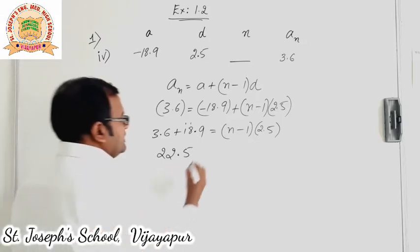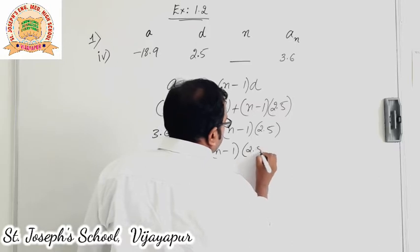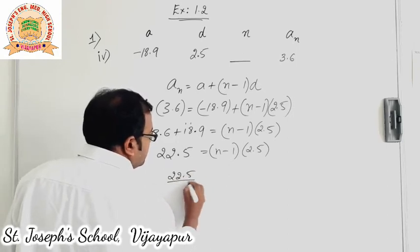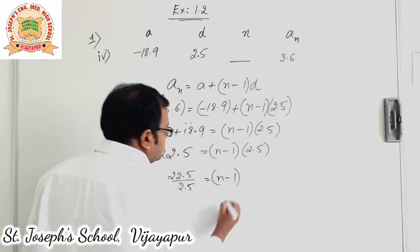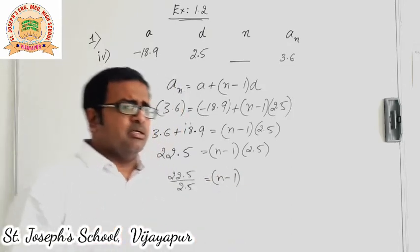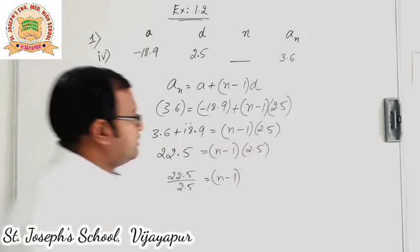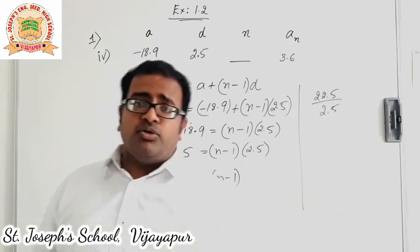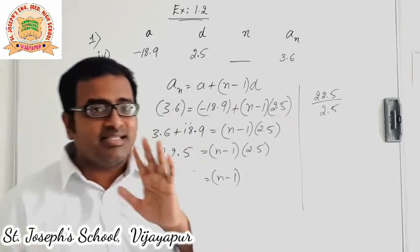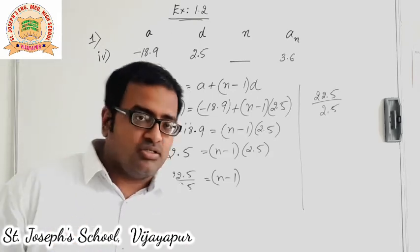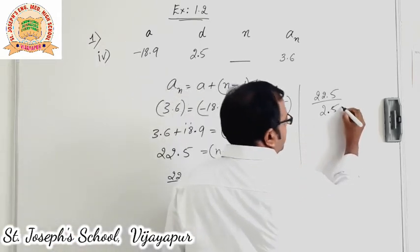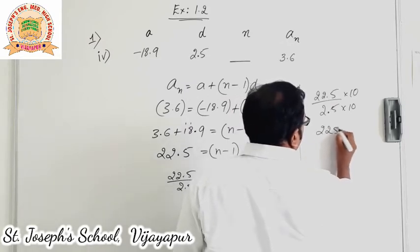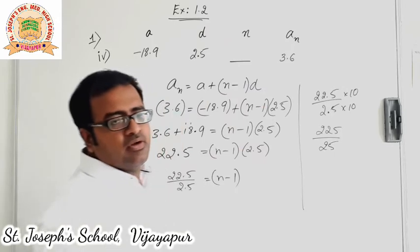22.5 is equal to n minus 1 into 2.5. 2.5 comes to the other side as division, so 22.5 by 2.5 is equal to n minus 1. Whenever decimals are involved, try to remove the decimal place. Here, since there is only one place after the decimal point, multiply both numerator and denominator by 10. So this becomes 225 divided by 25, which is simpler for simplification.